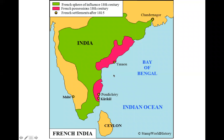Here is a map of India. The hot pink areas are French possessions established in the 18th century — Yanam in the northeast, Pondicherry in the south, Mahé on the western coast — and the green shows French suzerainty.